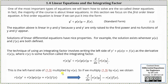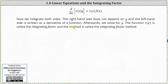If we multiply both sides of the equation by r of x, we have r of x times y prime plus r of x times p of x times y equals r of x times f of x. We can replace the left side of the equation with the derivative of r of x times y with respect to x. Once we have the equation in this form, we integrate both sides with respect to x. On the left side, the integral undoes the derivative, leaving us with r of x times y.